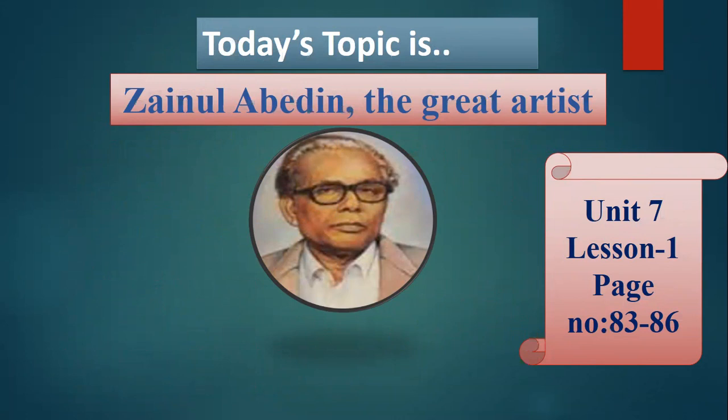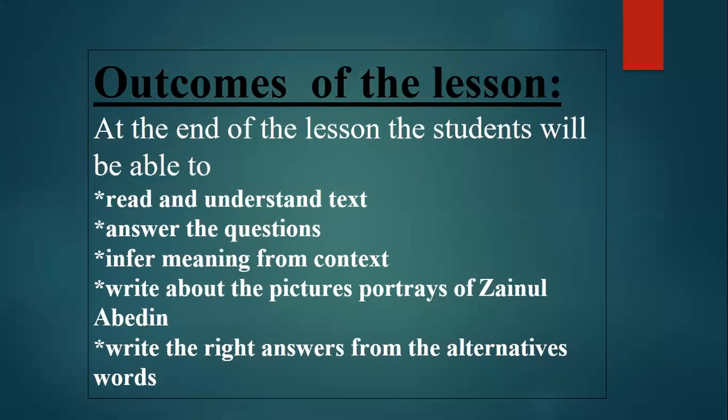It is in Unit 7, Lesson 1, page number 83 to 86. Outcomes of the lesson: at the end of the lesson, the students will be able to read and understand text, answer the questions, infer meaning from context, write about the pictures and portraits of Zainul Abidin, and write the right answers from the alternative words.